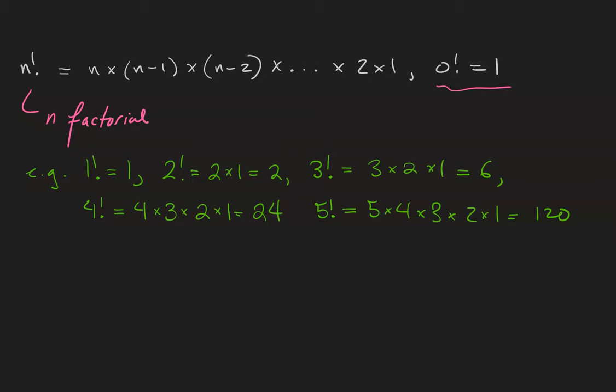You may have already noticed that each factorial appears in the following factorial. For example, when calculating 5 factorial, these four numbers here are actually 4 factorial. So I could express 5 factorial as 5 times 4 factorial.